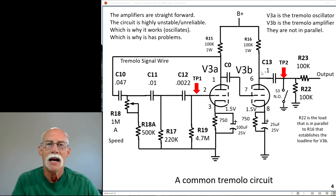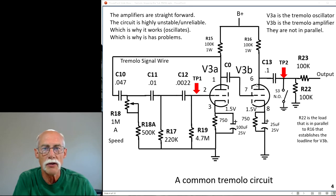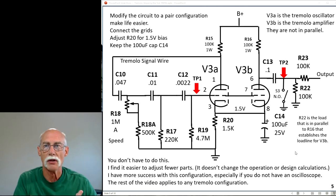These aren't in parallel, and that's important to point out. R22 is the load of V3B. R18 and R18A is the load on V3A, by the way. That establishes the load lines.